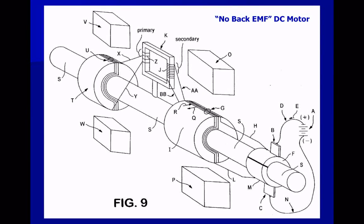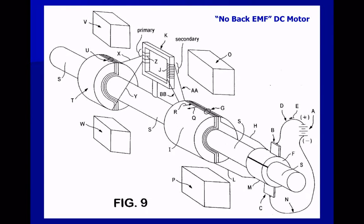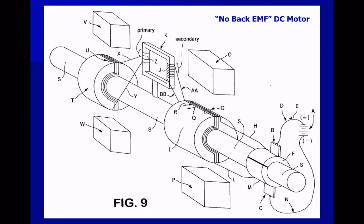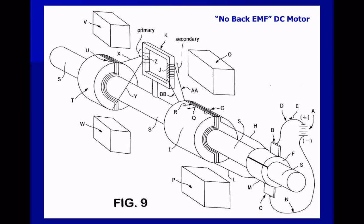Figure 9 is illustrative only and is not intended to show the number of windings, number of cancellation transformers, winding senses, exact physical appearance, nor the exact physical measurements or proportions of the elements of a no-back EMF motor configured according to the present invention. In an actual no-back EMF motor, there will be several brushes, several commutator segments, several main armature windings, several cancellation transformers, and several cancellation armature windings. Furthermore, for each main armature winding, there will be one cancellation transformer and one cancellation armature winding.